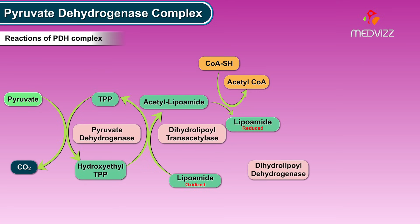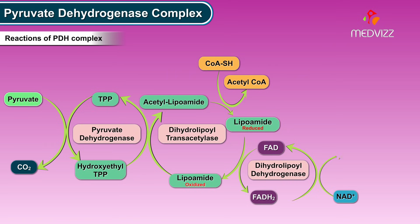Dihydrolipoyl dehydrogenase then catalyzes conversion of reduced lipoamide into oxidized lipoamide by transferring the reduced equivalents to FAD, completing the cycle. FADH2 in turn transfers these reduced equivalents to NAD⁺ to give NADH and H⁺, which enters the respiratory chain to yield 2.5 ATP by oxidative phosphorylation.